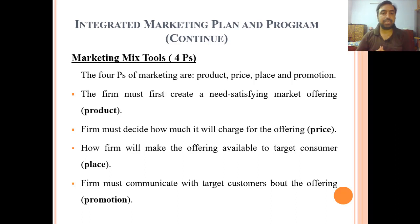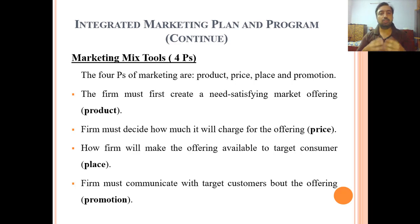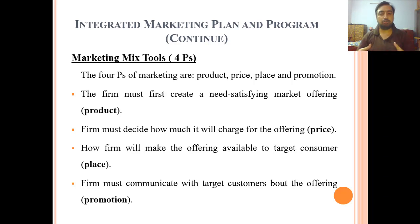Means ke in ko company control kerti hain — kya product banana hai, kya price rakhni hai, kis tarah se logo tak pehunchaana hai, kis tarah se promote karna hai. Yeh company ke controllable tools hain jo company use karthi hai customer ke purchasing behavior ko influence karne ke liye.